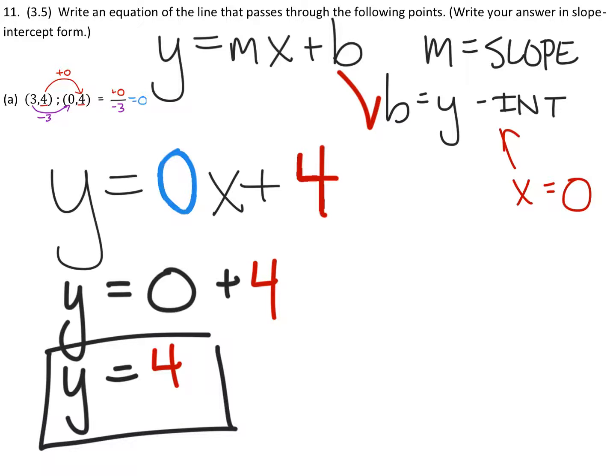That's a linear equation, a straight horizontal line. Technically, this is slope-intercept form, but some teachers may want to see it more like y = 4.